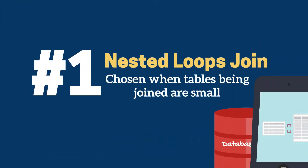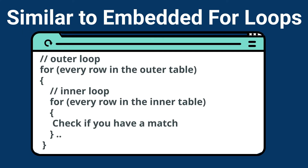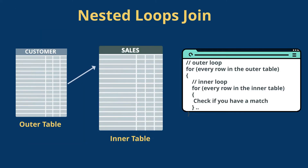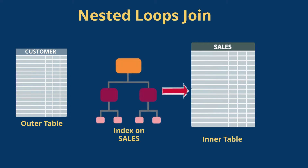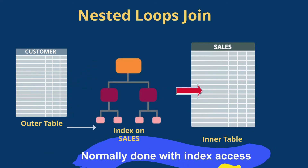With nested loops, this join method is usually chosen when the tables we're joining are quite small. You can think of it as embedded for-loops — for every row in the outer table, we're going to scan the inner table looking to find a match. It's normally chosen when we've got two small tables and we have an effective way to look up rows in that inner table, so normally it's an index access on that inner table.